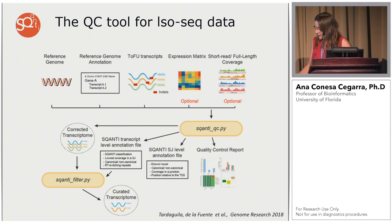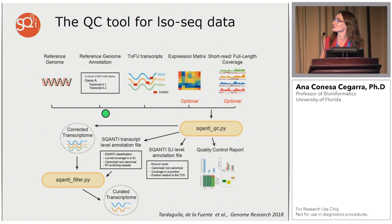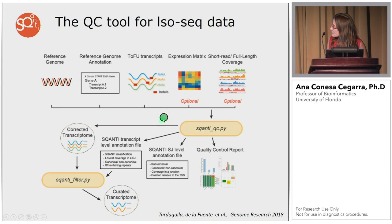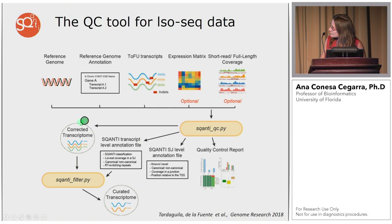SCANTY was developed as a quality control tool for the analysis of IsoSeq data. Basically, we start with transcripts generated by the IsoSeq pipeline — before it was the TOFU pipeline. We may also have some information on expression, and if we have short reads we can indicate coverage. We also have the reference genome and transcriptome. With all this, we run this quality control pipeline in which we generate a number of quality reports. More importantly, we characterize a number of features at both the transcript and junction level, allowing us to do quality control filtering resulting in a transcriptome that has passed quality control requirements.